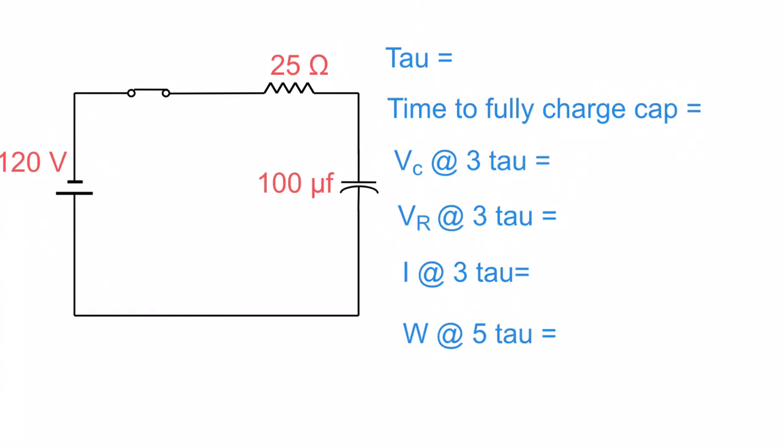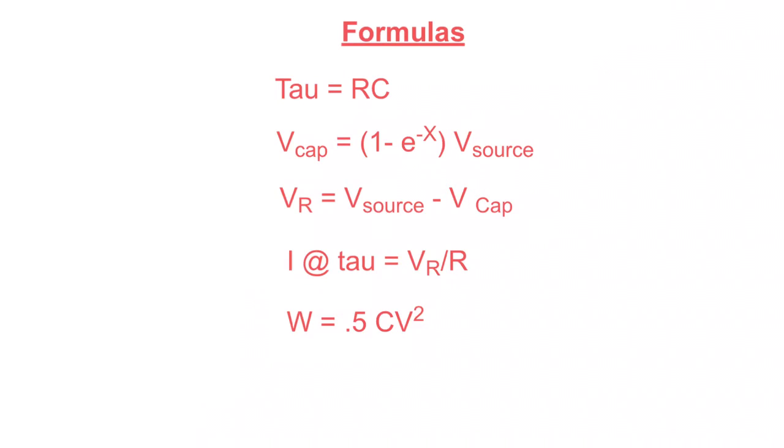So let's take a quick look at the formulas. Our tau, with the inductor it was L over R. With the capacitor, it is R times C. We have no L, obviously.